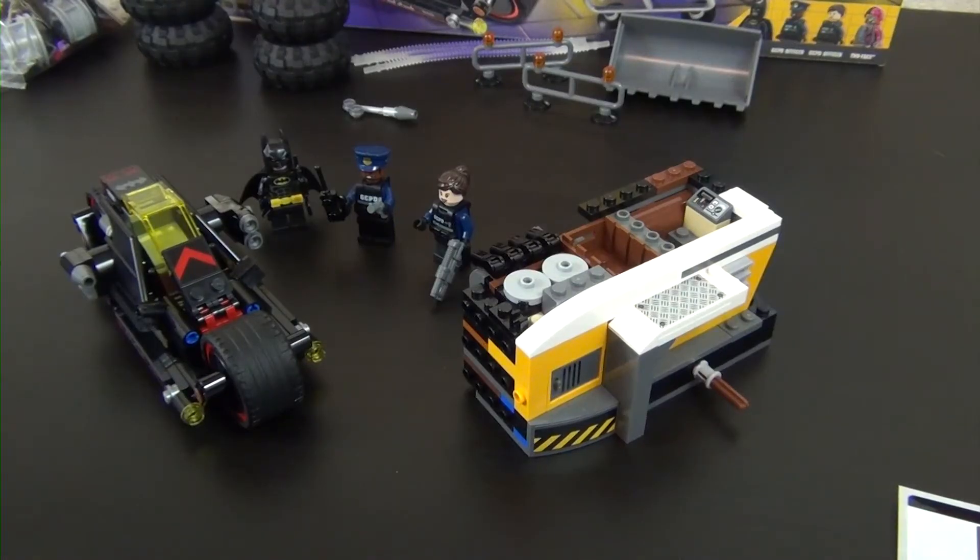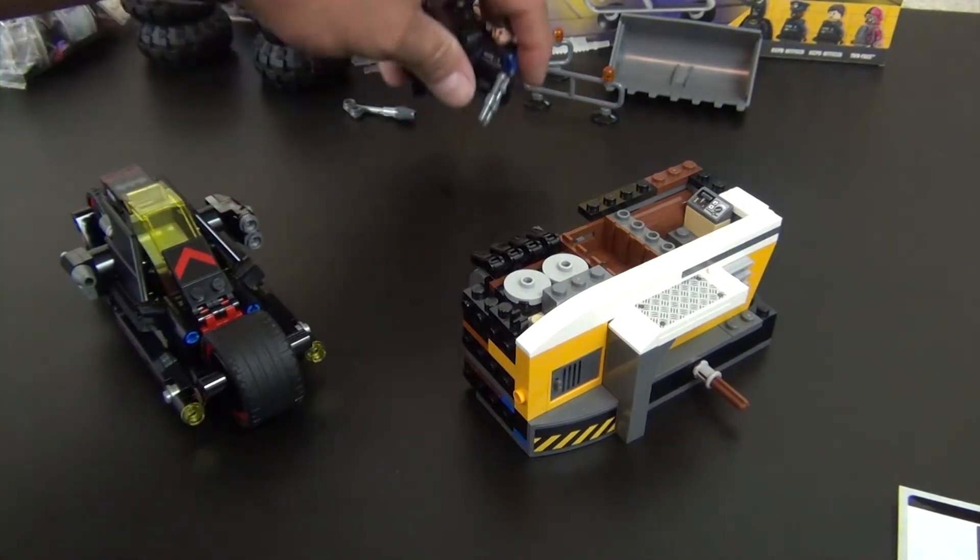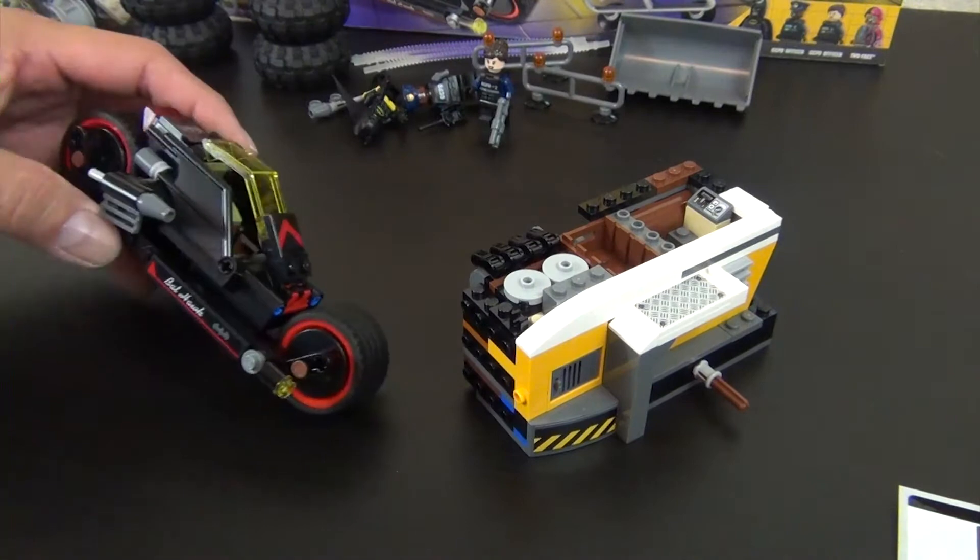Hey everyone, welcome back to the Hidden Brick where today we're doing part two of the build of the LEGO Batman Movie Two-Faced Double Demolition. This is how far we made it in part one - if you missed it, check it out, there's a link down below. We have three minifigures.